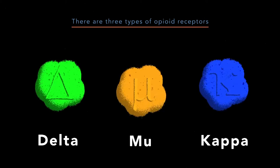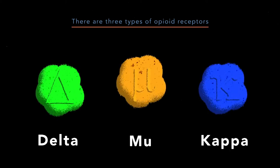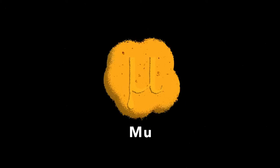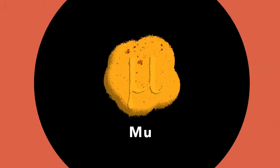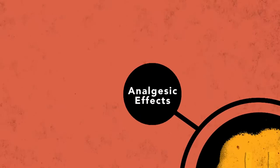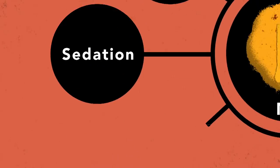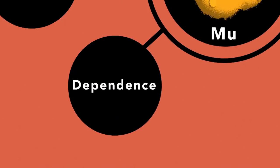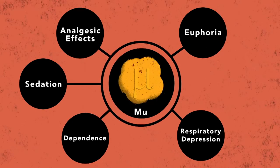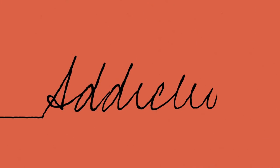Opioids that are either used for treatment or misused produce their effects primarily from binding to mu receptors. Activating these receptors can produce analgesic painkilling effects, euphoria, sedation, dependence, respiratory depression, and more. The euphoric effects and dependence in particular may lead to addiction.